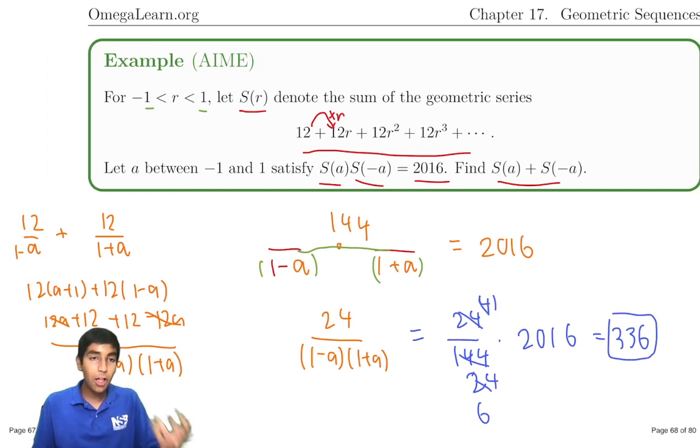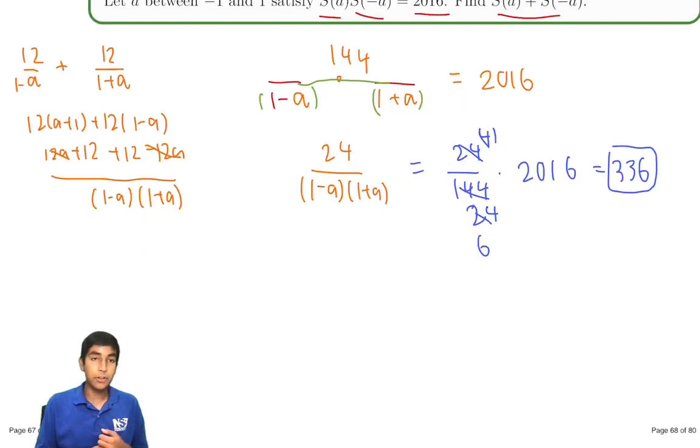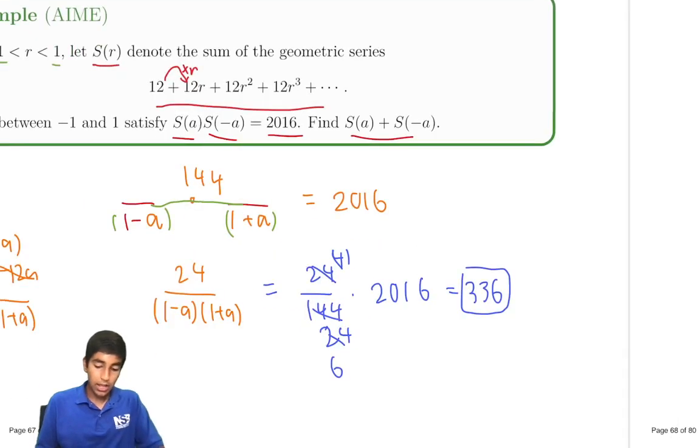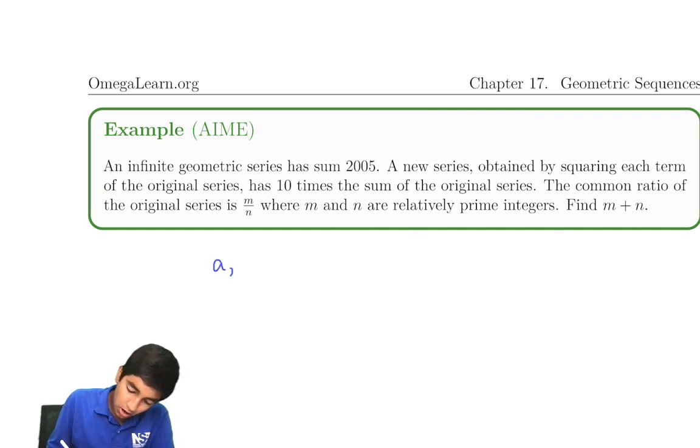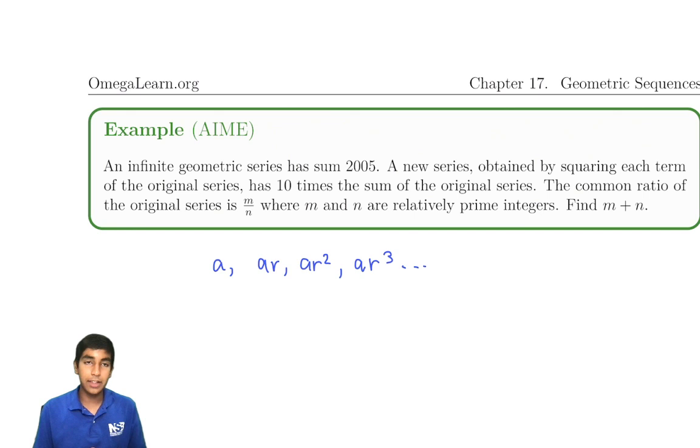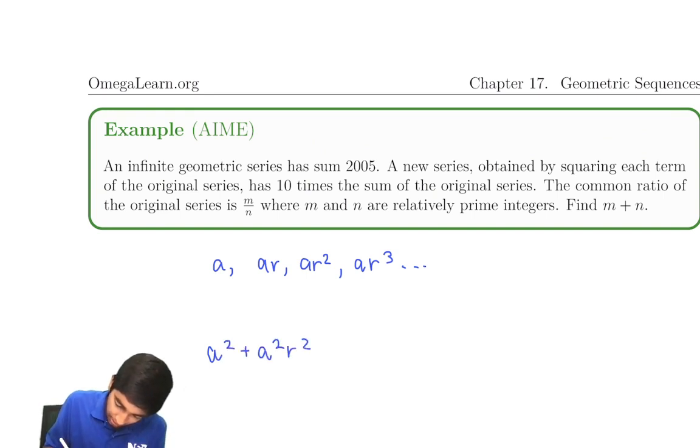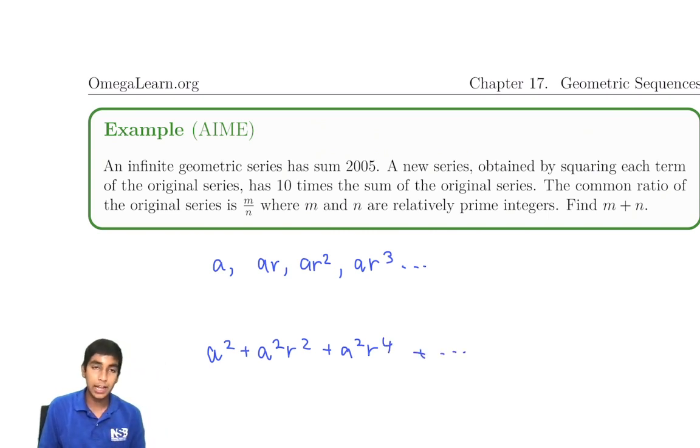To summarize, we just use the formula, and then we looked at what we're trying to find, and then we just found that. Next, we have another problem using infinite geometric series. An infinite geometric series has a sum 2,005. Let's say we have a, and then ar, and then ar squared, and then ar cubed, and so on. A new series, we're squaring every single term, and it has a sum that's 10 times more. So a squared plus a squared r squared plus a squared r to the fourth.